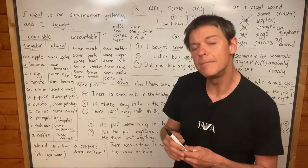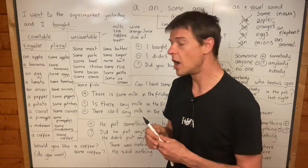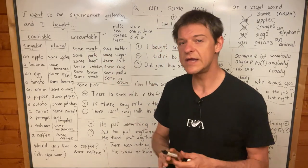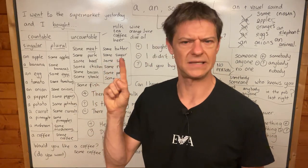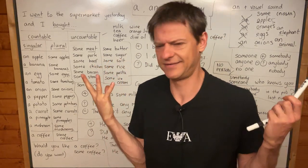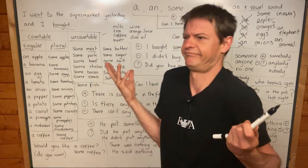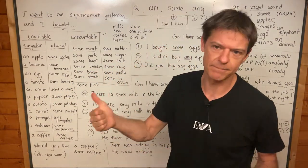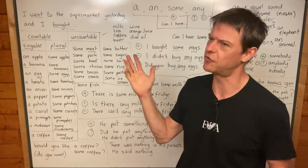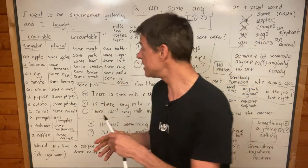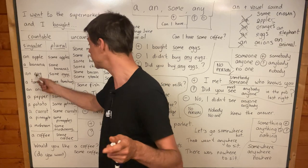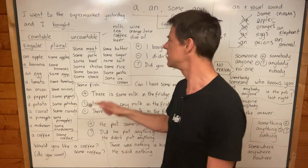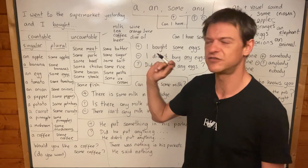But some things we can't count. We can't count meat — we can't say one meat, two meats, three meats. It's strange, it doesn't work. We can say one banana, two bananas, three bananas; one egg, two eggs, three eggs. But we can't say one meat, two meats, three meats.